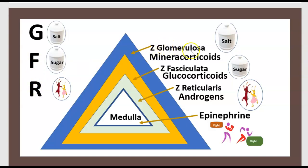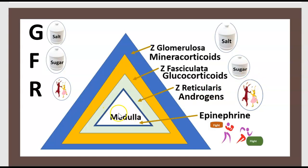The glomerulosa zone is for mineralocorticoids — to remember that: salt. Fasciculata is for glucocorticoids — to remember that: sugar. Reticularis is for androgen — to remember that: sex. The medulla is for epinephrine, adrenaline, and noradrenaline — to remember that: fight or flight.